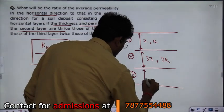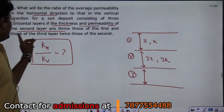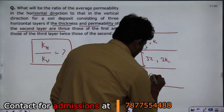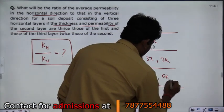And for the third layer, twice that of the second. If we do this, it will be 6z and 6k.